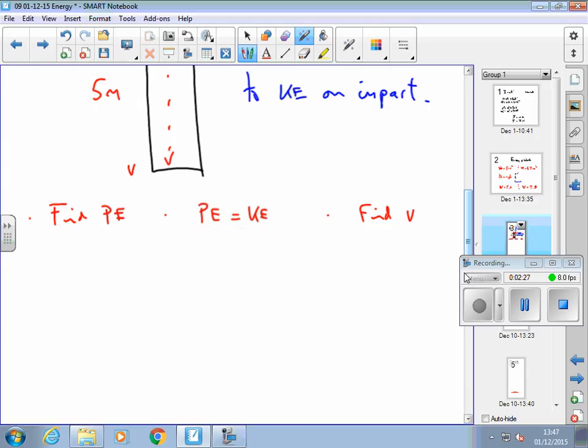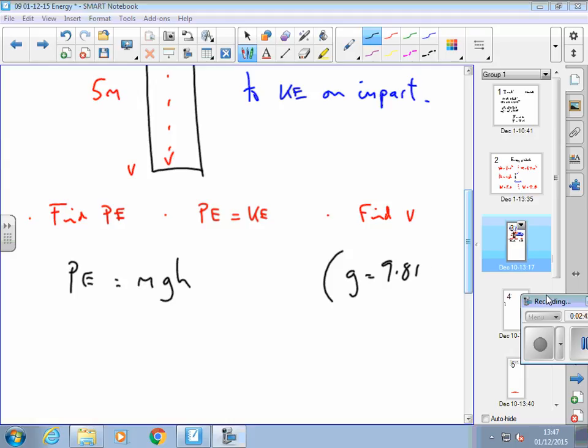The potential energy at the top is mgh. I'll check units are consistent. G equals 9.81 newtons per kilogram.